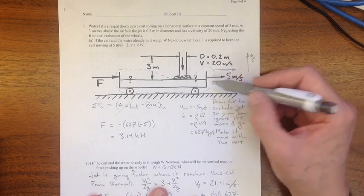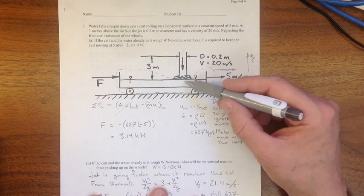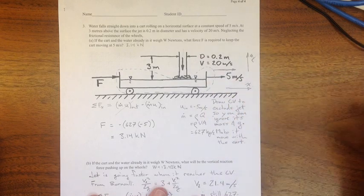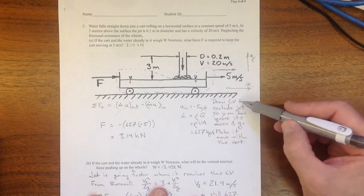And I'm going to make that control volume move with the cart, so that everything simplifies. So if it's moving with the cart, I don't have the cart moving inside the control volume, I don't have stuff leaving the control volume as the cart rolls out the other side, so that's going to work out well for me.